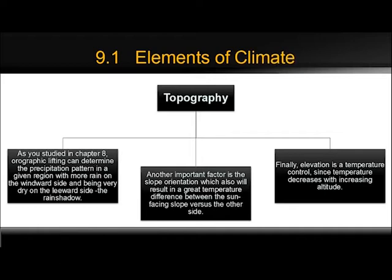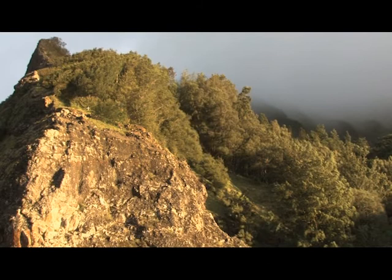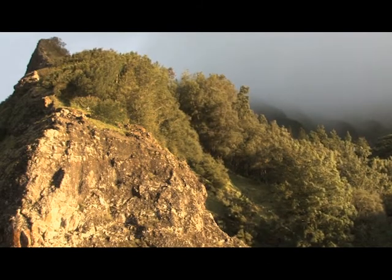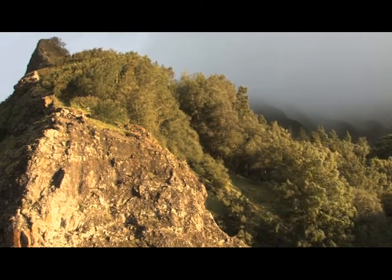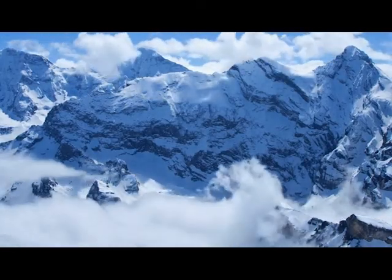Topography also affects climate in a variety of ways. The orientation of mountains to prevailing winds affects precipitation. Windward slopes — those facing into the wind — experience more precipitation due to the orographic uplift of the air. Leeward sides of mountains are in the rain shadow and thus receive less precipitation. Air temperatures are affected by slope orientation, as slopes facing into the sun will be warmer than those facing away. Temperature also decreases as one moves toward higher elevation.